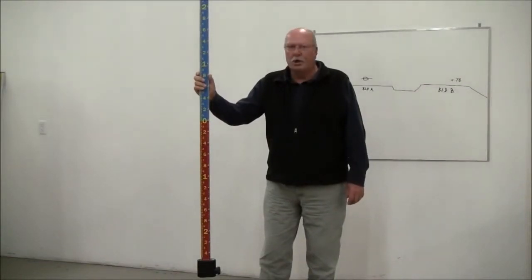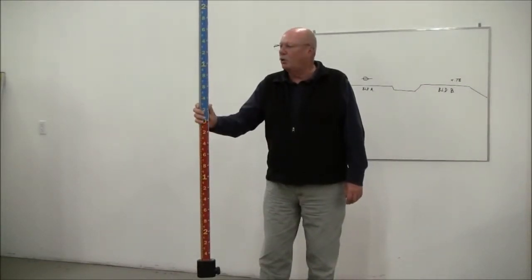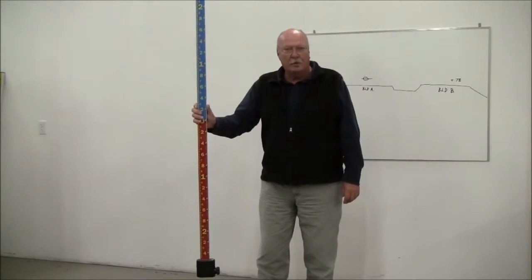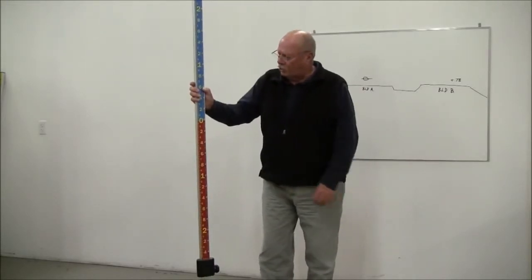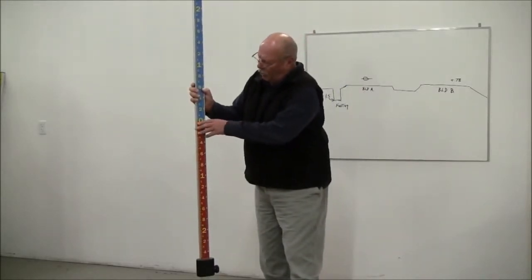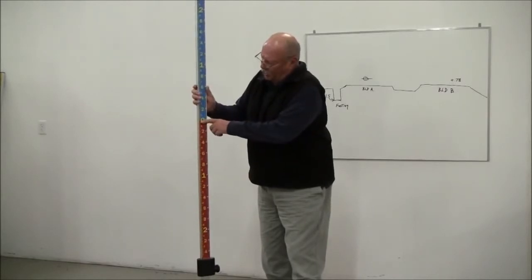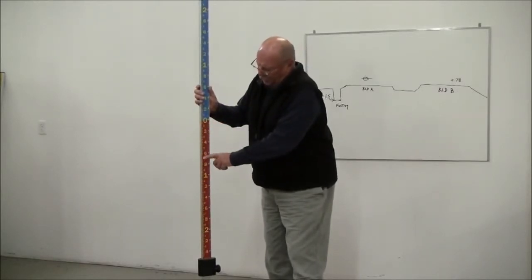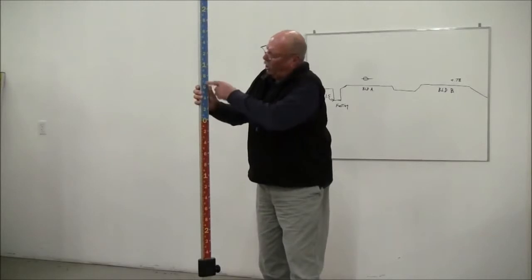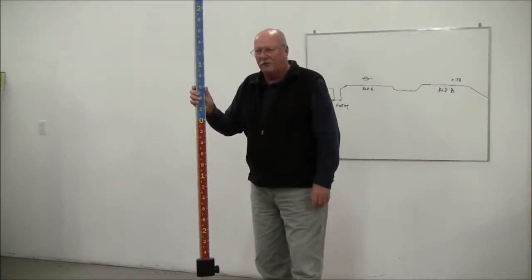We're here today to talk to you about a product called the Easy Read Grade Rod. The unique feature about this grade rod is that it has a zero point and then you have your numbers running down or up from that point.